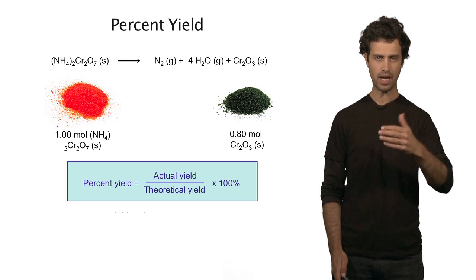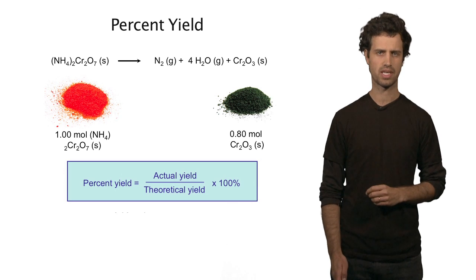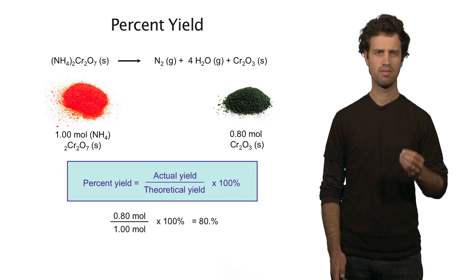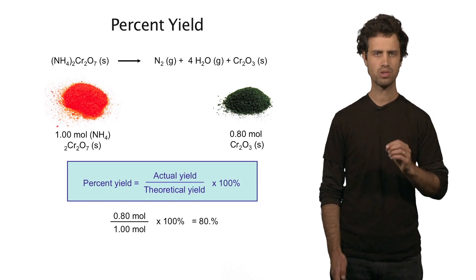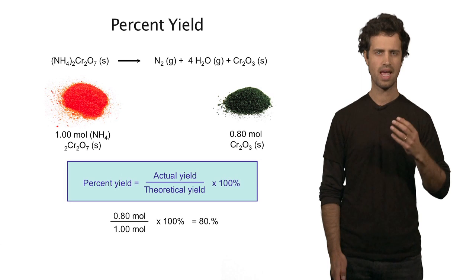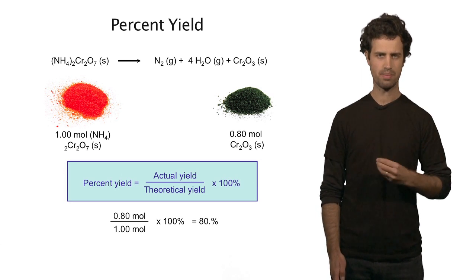It is the ratio of the actual amount over the expected amount, theoretically, times 100%. So in this case, we found 0.8 moles of the product. We expected 1 mole. That ratio times 100% equals 80%. In this example, the percent yield is 80%.